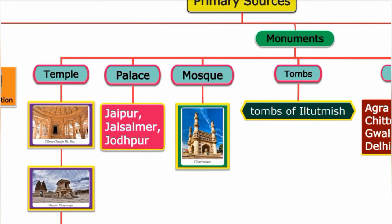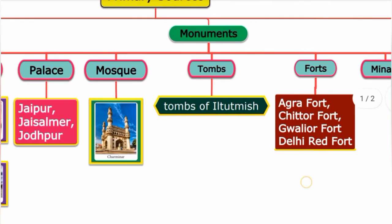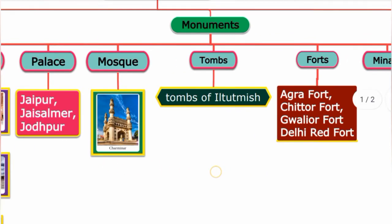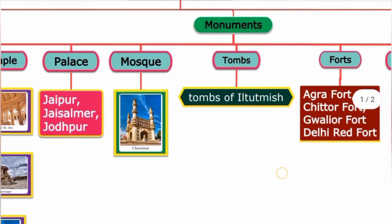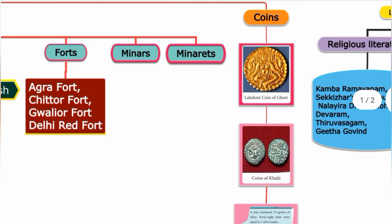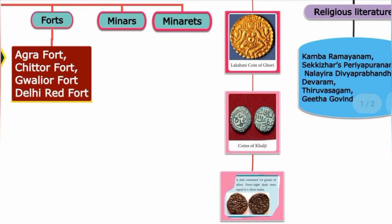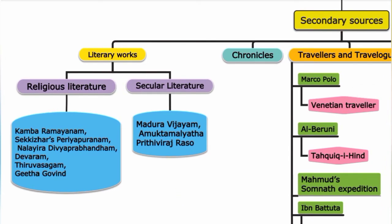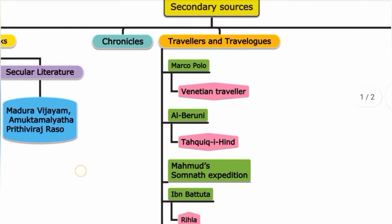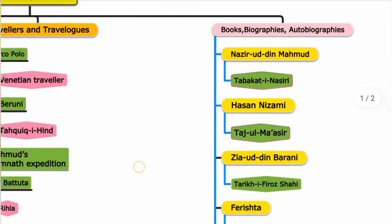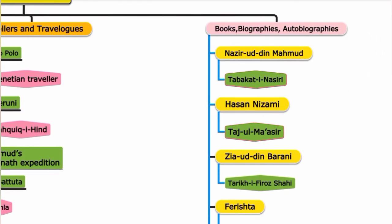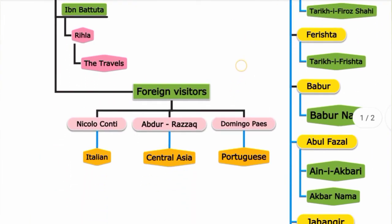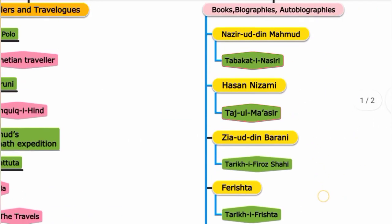Overall mind map view: Primary sources include inscriptions, monuments (temple, palace, mosque, tomb, fort, minars, minarets), and coins. Secondary sources include written materials — literary works (religious and secular literature), chronicles, travelers and travel logs, and books, biographies, and autobiographies. This is the sources of Medieval India mind map.